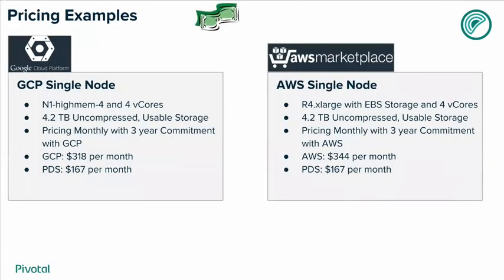Some pricing examples: on the left is GCP single node and on the right is AWS single node. They're basically the same — high memory, four vCores, four terabytes uncompressed storage across both. Pricing is monthly with a three-year commitment from the cloud vendors — 318 dollars for GCP, 344 dollars for Amazon. The PDS — Pivotal Data Suite, which includes Greenplum — is the same cost because it's the same number of virtual cores. Very inexpensive for a fully cloud development environment that's completely supported, just like on-prem.